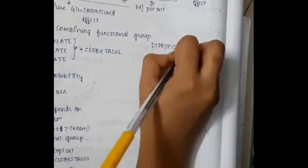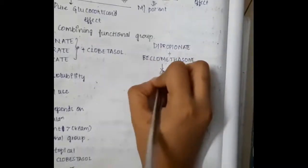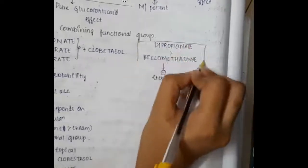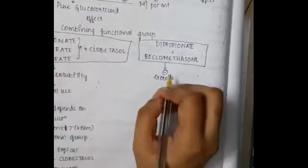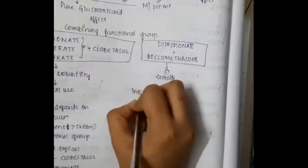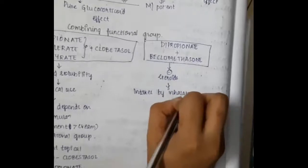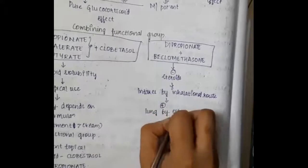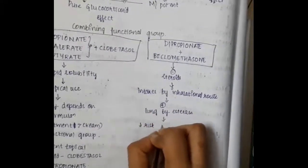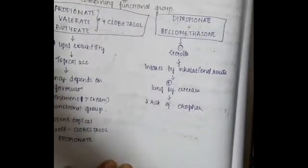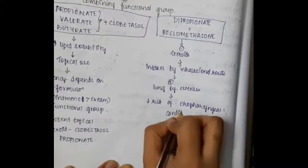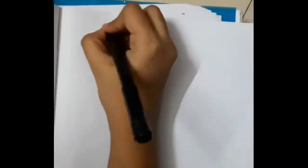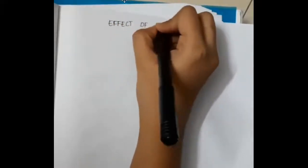Dipropionate can be added to beclomethasone to form beclomethasone dipropionate. When steroids are given by inhalation, this activates lung esterases, which decreases the risk of oropharyngeal candidiasis.